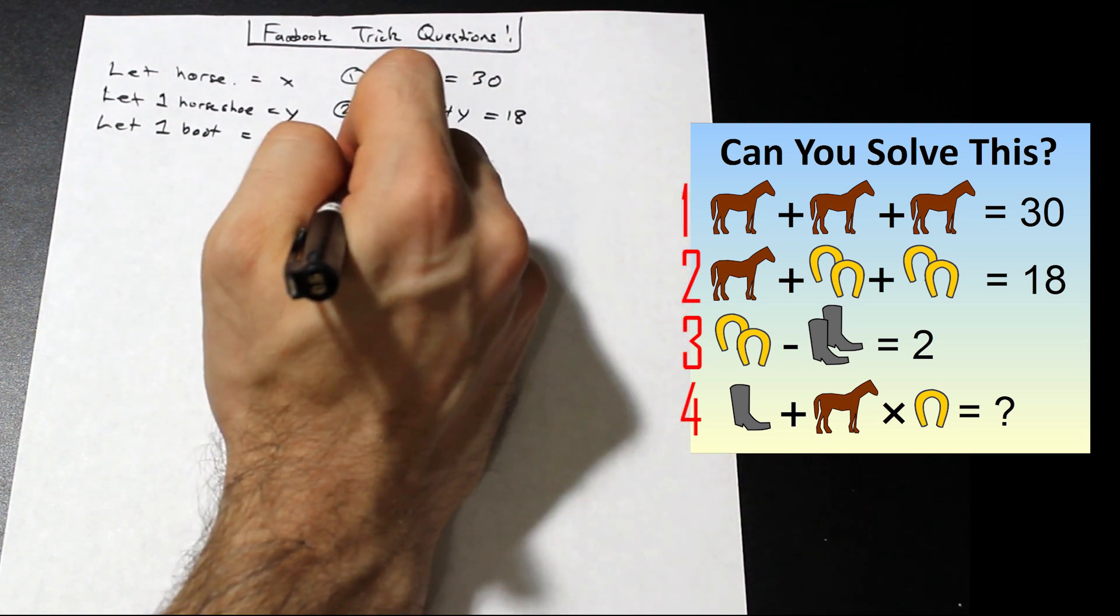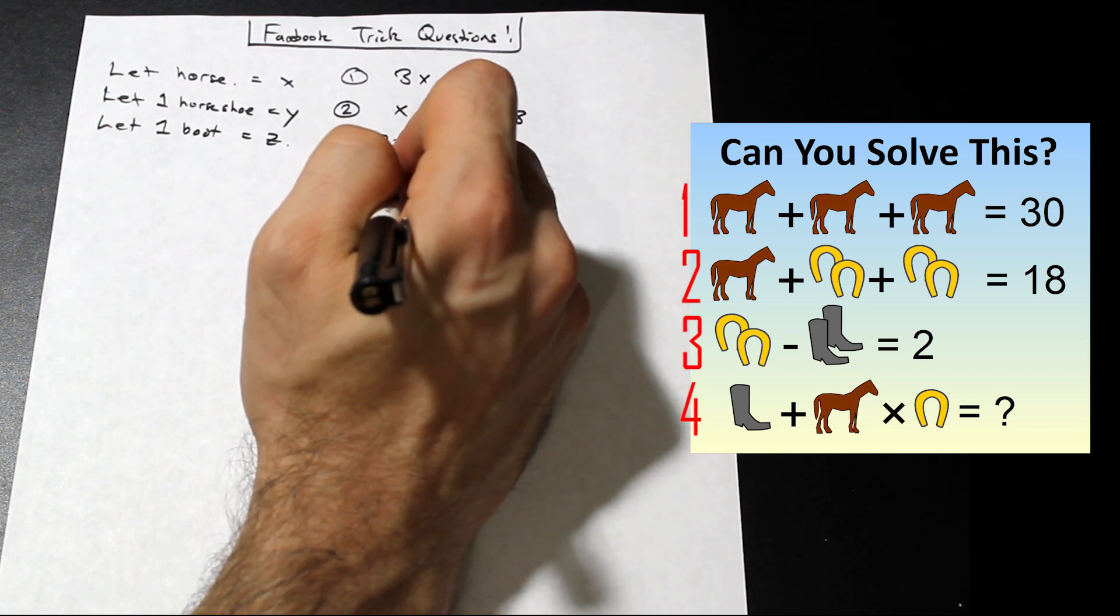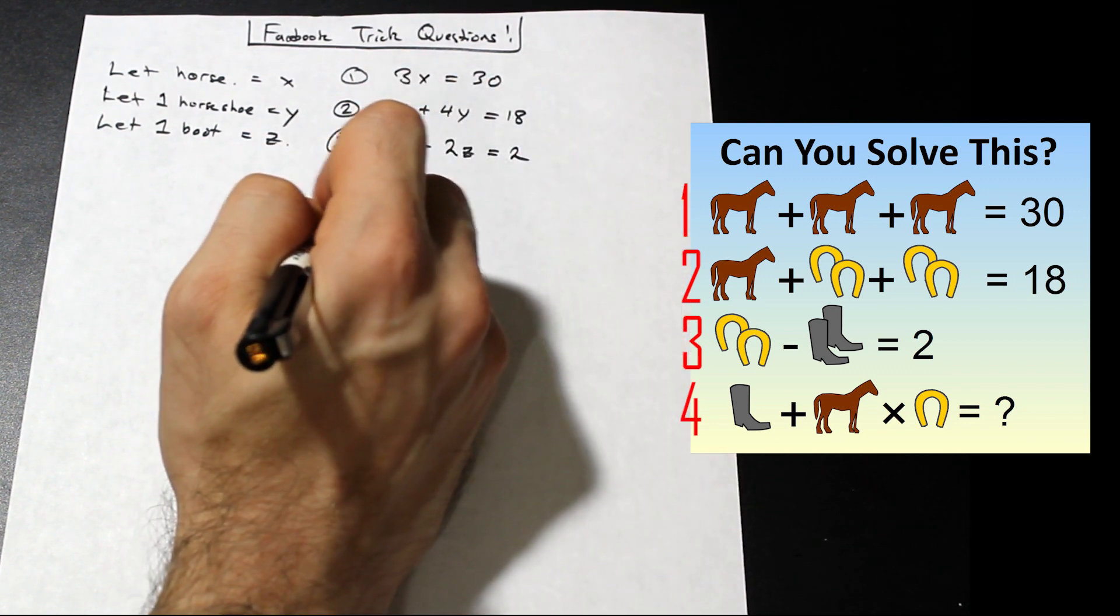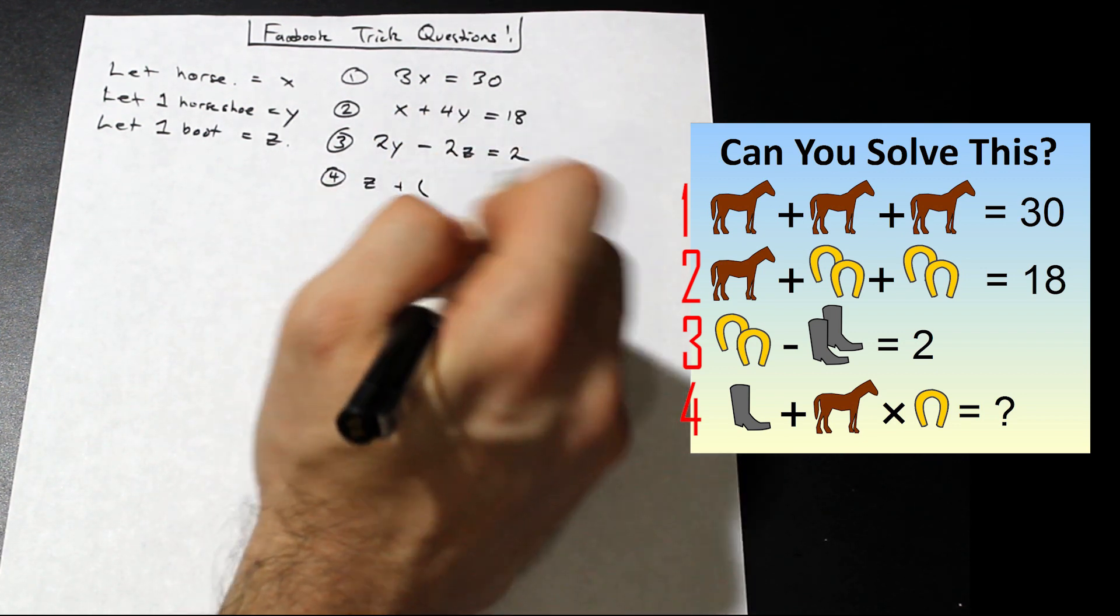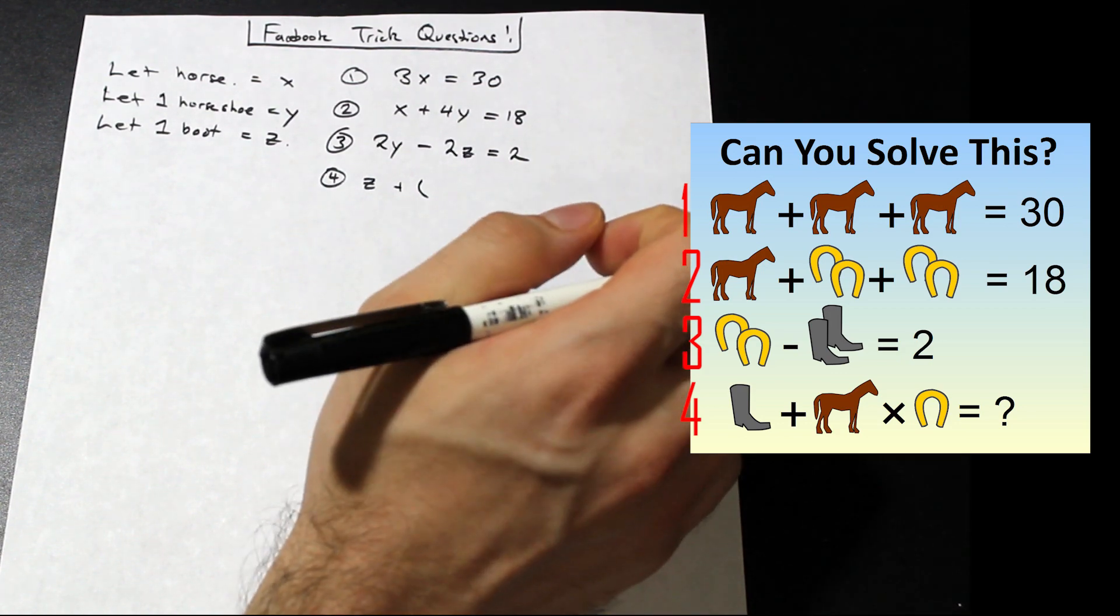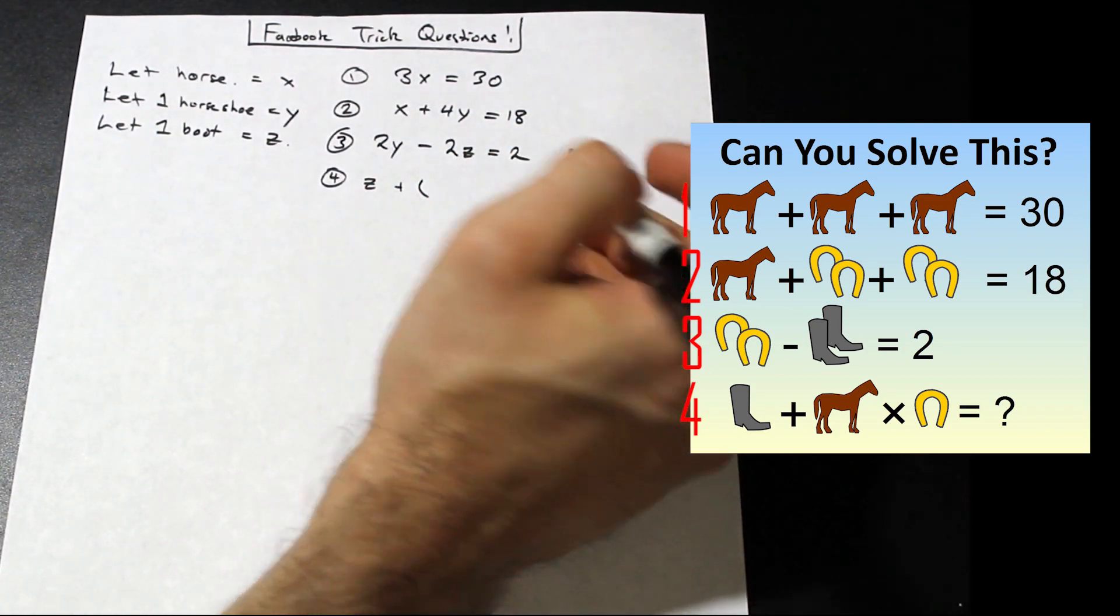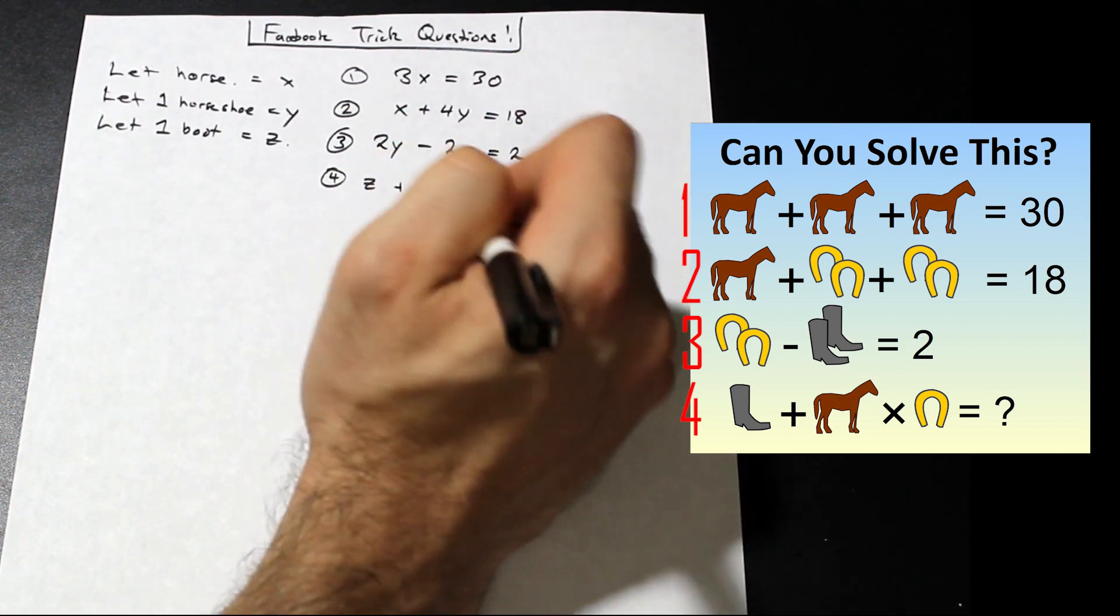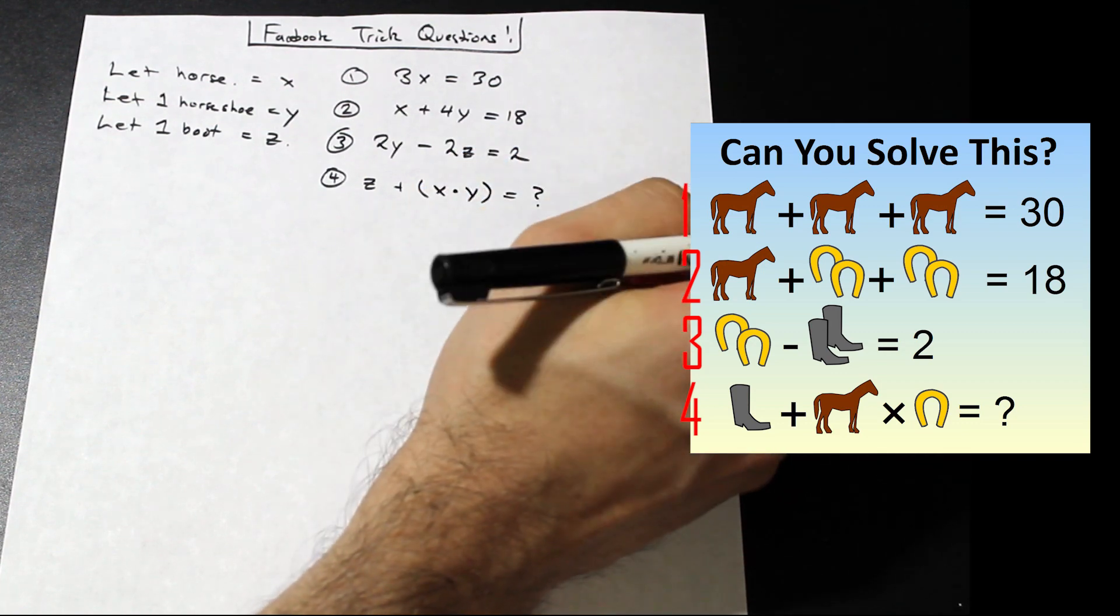And we're going to go ahead down to the third equation. We're just going to continue like this. You can do this with any problem on Facebook guys. Let's take a look at the horseshoes where we have two horseshoes. So that's going to be 2Y. We're going to subtract two boots, that's 2Z, and that is all equal to two. And our fourth equation, we have one boot. And I like to put brackets here because it reminds me that we need to do the multiplication before the addition. So we need to follow order of operations. If you're not familiar with that, you need to multiply or divide before you add or subtract. When we put the brackets in, that's going to let us know that we need to do that first because brackets always come first in order of operations. So I'm going to go X times, that little dot means times, Y, and that is equal to unknown right now. We're going to find that out after.